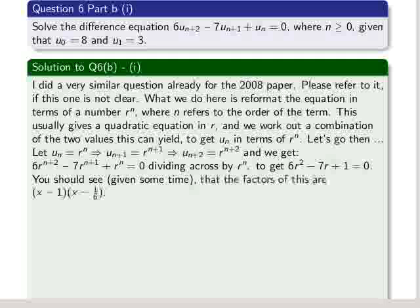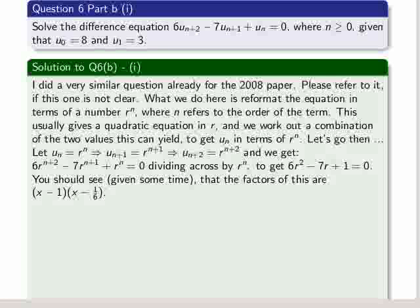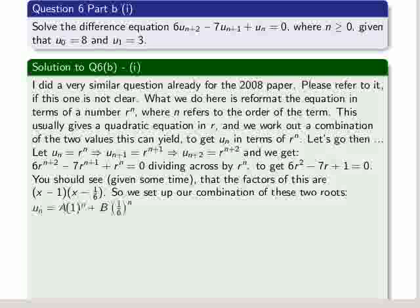And we get the quadratic 6 times r squared minus 7r plus 1 equal to 0. You should see, given some time, that the factors of this are fairly simple. Not extremely simple, but a little bit simple, which is x minus 1 times x minus 1/6. So we set up the combination of these two roots. So we use capital A first for the first root, which is 1 to the power of n, and capital B for 1/6, which was the second root. Again, put to the power of n.